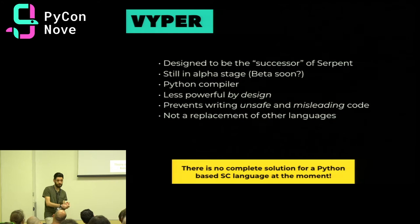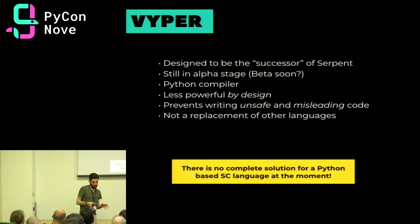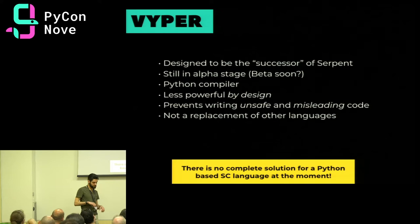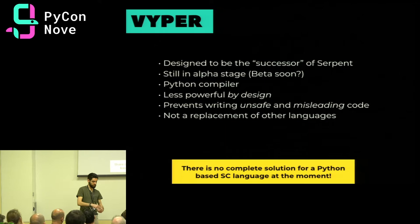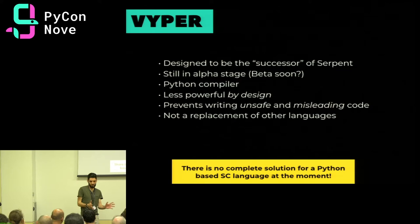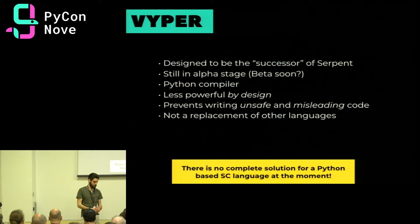Viper should be the successor to Serpent. It is still built with Python-like syntax, and it provides a Python compiler — much nicer than Serpent's C++ compiler. It is less powerful by design, because it restricts what you can do in order to provide a safer environment — so the compiler will warn you at compile time if you're in a dangerous situation. We're in a kind of limbo right now between Serpent, which is no longer recommended, and Viper, which is still in a pre-beta stage. We'll have to wait a few months for Viper to become officially supported.